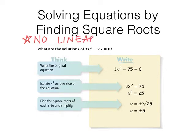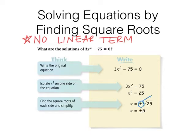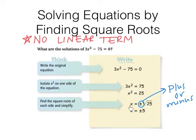Consider 3x squared minus 75 equals zero — there's no x term. When there's no linear term, you isolate the x squared. In this case, they divided by 3. Then you take the square root of both sides. This little symbol is called plus or minus. The solutions to x squared equals 25 are positive 5 and negative 5. When you take the square root of both sides to get x by itself, you have to put a plus or minus in front of the result.